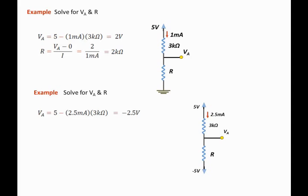Because we know the value of the voltage at the top of the resistor R, that is VA, we just solved for it to be negative 2.5, and the voltage at the bottom of the resistor R, that is negative 5 volts.